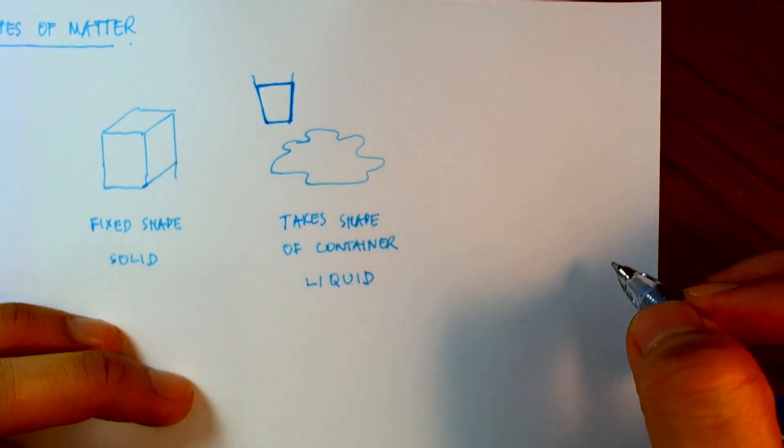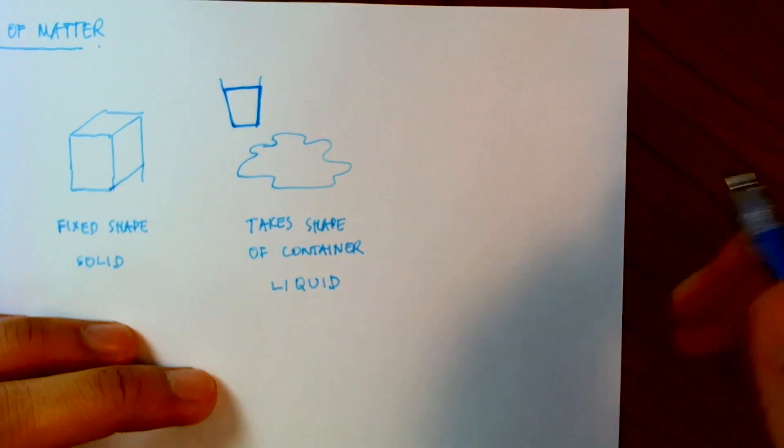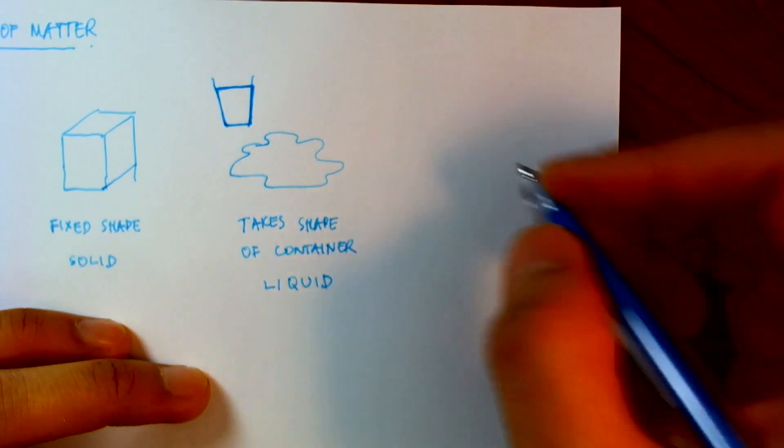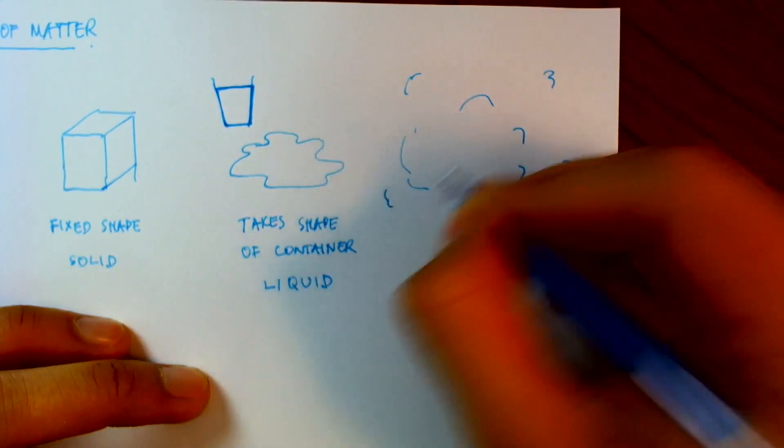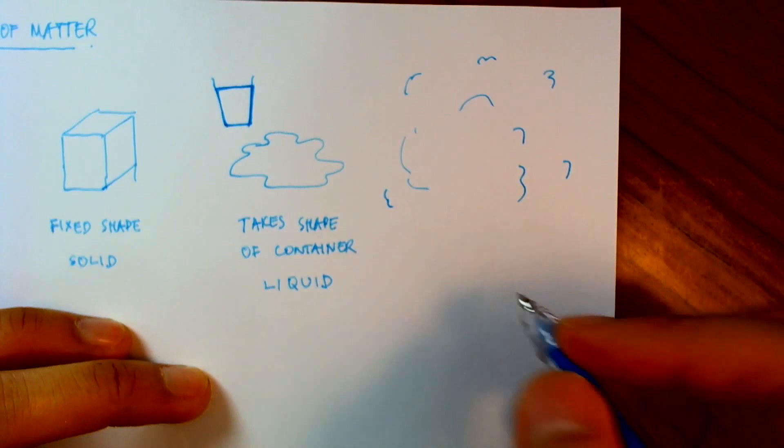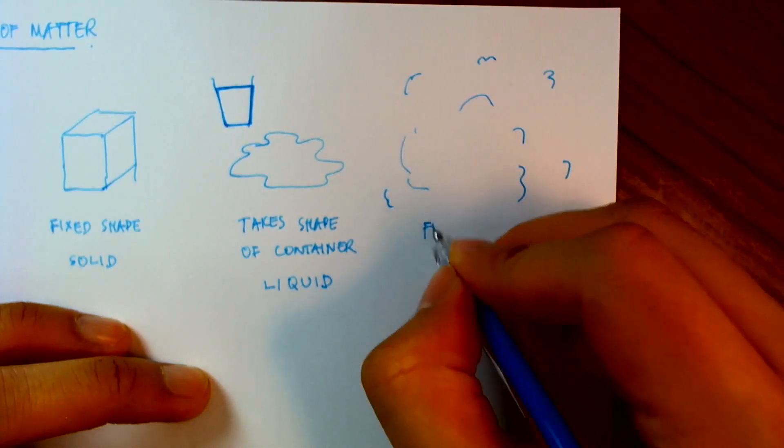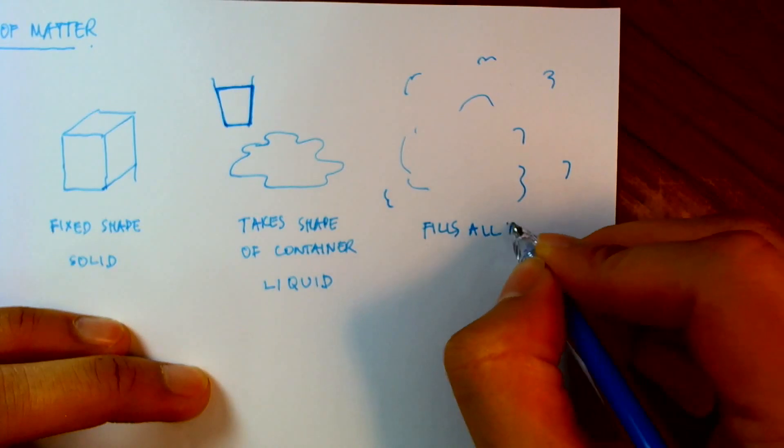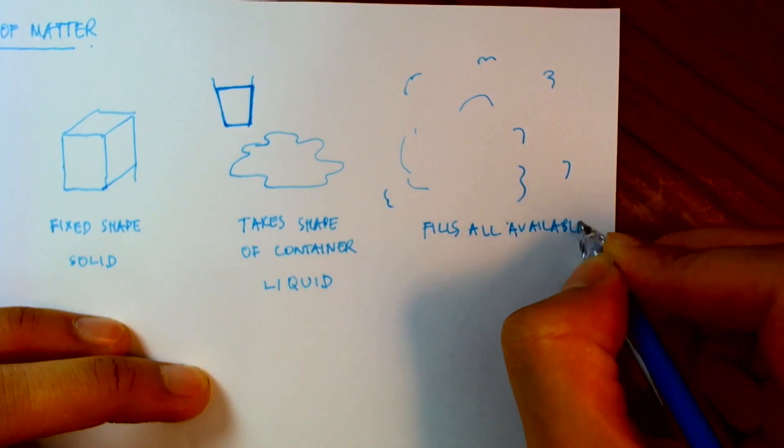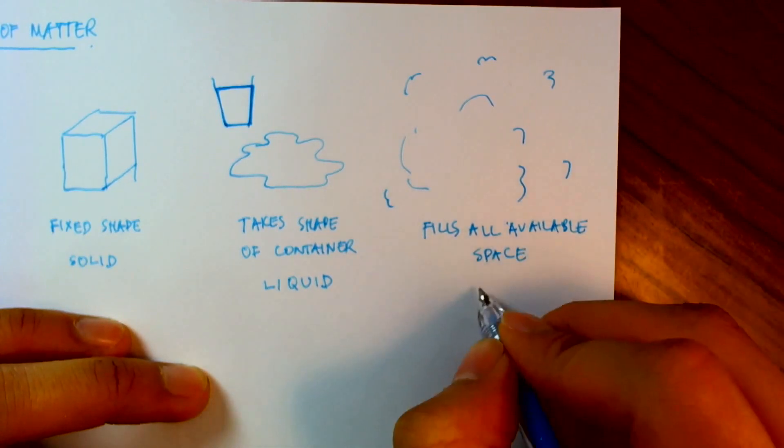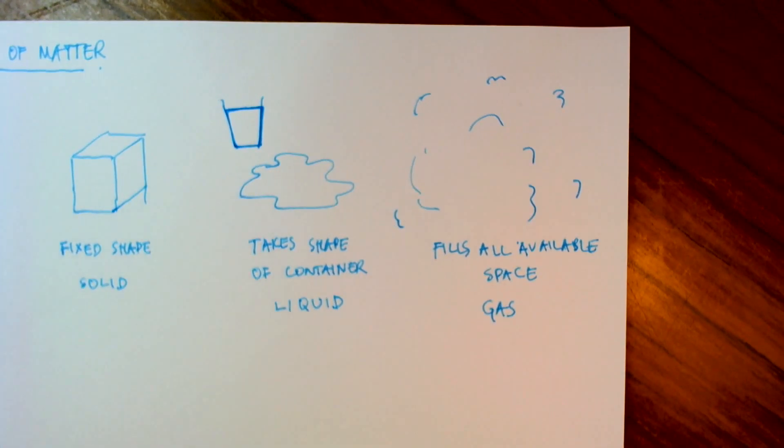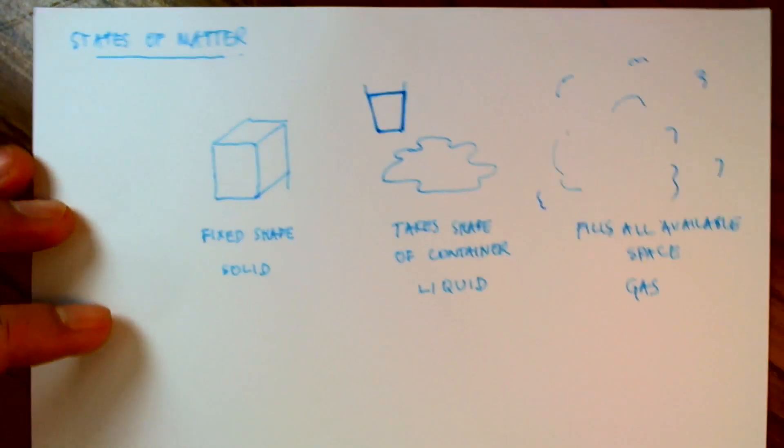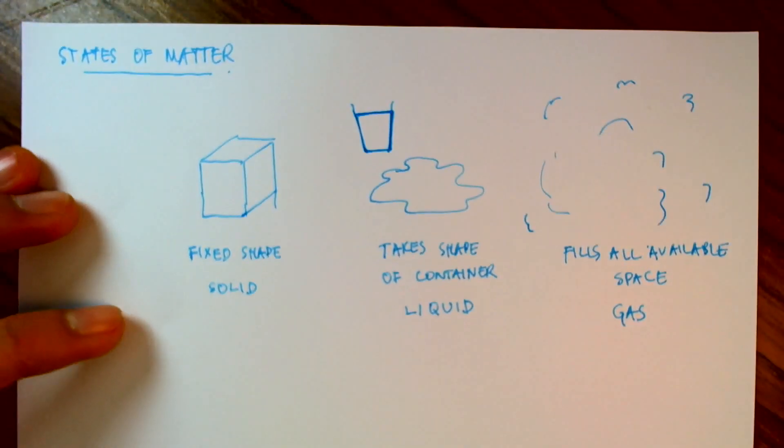And if I heat this up even more, it will start to evaporate and turn into something that tends to fill all available space. So it just spreads out and fills all available space. And something like that we call a gas. Now these are the three states of matter that we are most familiar with. There is a fourth state of matter, but I won't go into that because that only happens in very high temperatures, like in the sun.